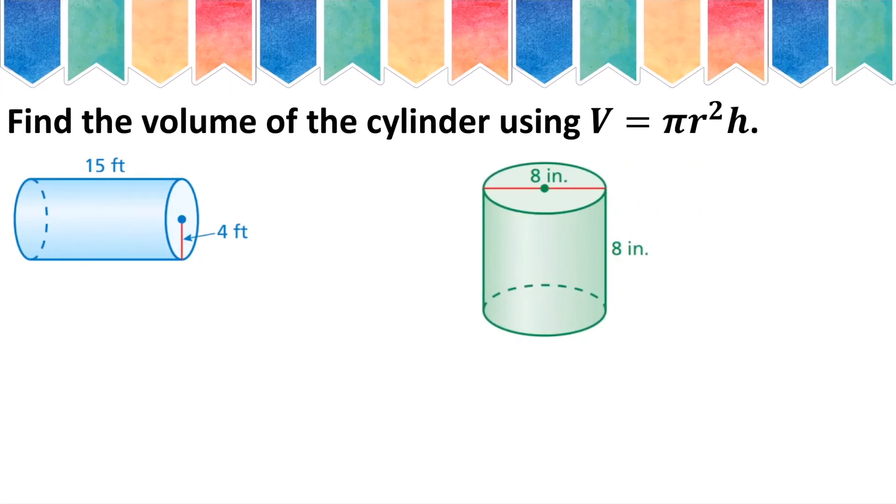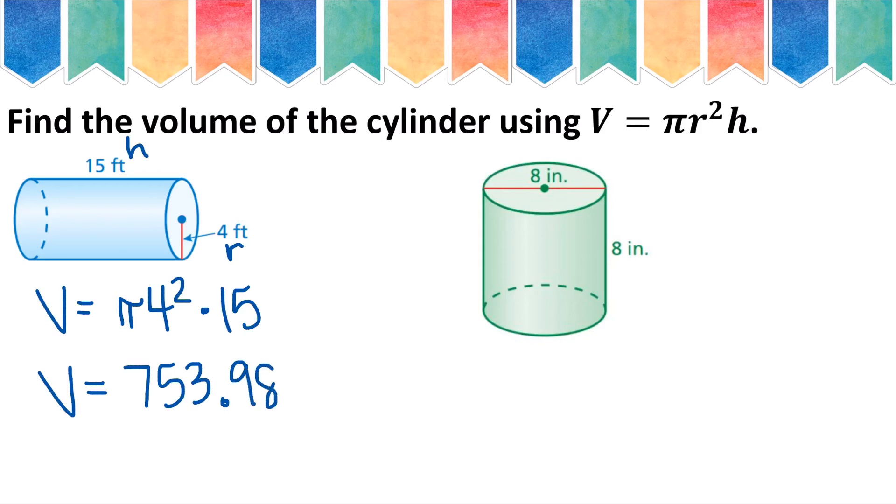Find the volume. So for this first question, 4 would be my radius and 15 would be my height. So pi, 4 squared times 15. And in my calculator, I am going to use my pi button. And I will get approximately 753.98 and I label my answer feet cubed.